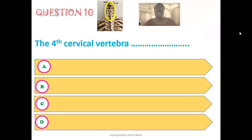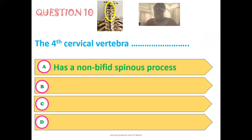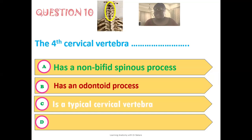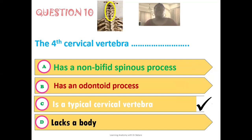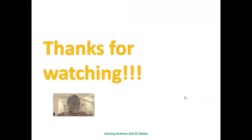The tenth and final question: which statement is true of the fourth cervical vertebra? Options are: it has a non-bifid spinous process, it has an odontoid process, it is a typical cervical vertebra, or it lacks a body. The correct answer is that the fourth cervical vertebra is a typical cervical vertebra. Along with C3, C5, and C6, it shares the same structural configuration, which is why they are all referred to as typical cervical vertebrae. Thanks for taking this quiz — leave your grades in the comments!